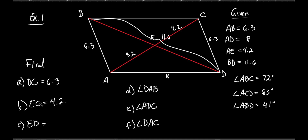Part C is a little trickier but it's the same idea — diagonals bisect each other. But they give you the whole diagonal BD which is 11.6, not just one part. So to find ED, I divide 11.6 by 2, which equals 5.8. And by the way, BC would equal 8, since BC and AD are opposite sides.